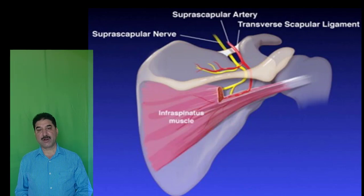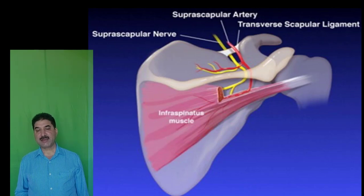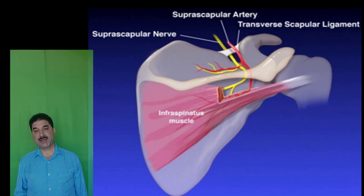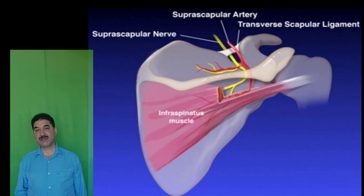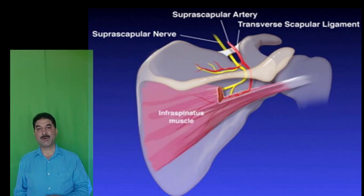The superior border of the scapula contains the suprascapular notch, which is covered by the transverse scapular ligament. At times this ligament gets ossified, converting the notch into a foramen called the suprascapular foramen. The suprascapular artery passes above the ligament and the suprascapular nerve passes below the ligament. Remember: artery is like air force — it lies above; nerve is like navy — it lies below in the sea.